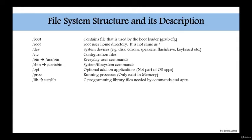/lib, which now points to /usr/lib, is the location where all C programming library files are stored. These files are needed for commands and applications. For example, when you run a command like pwd or ls, those commands have libraries they reference, because they are written in C and C++. To see which library files are used by a command, you can use: strace -e open pwd.